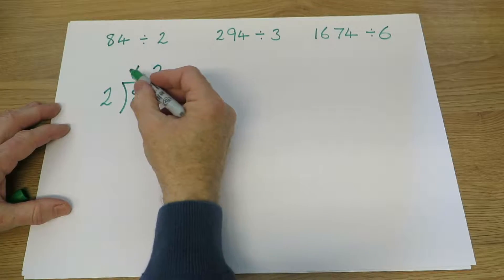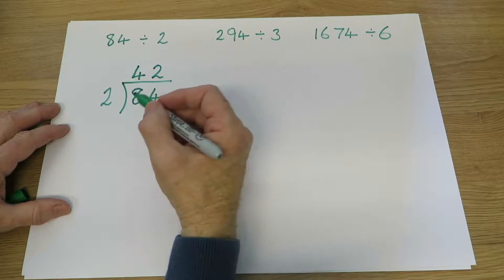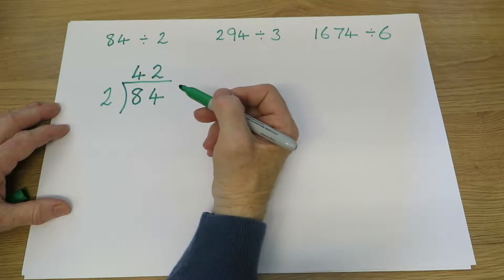So 84 divided by 2 is 42, which means there are 42 twos in 84, or two sets of 42.